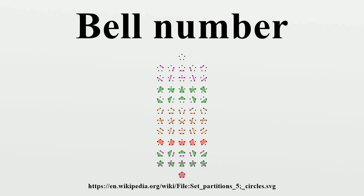BN is the number of partitions of a set of size N. A partition of a set S is defined as a set of non-empty, pairwise disjoint subsets of S whose union is S. For example, B3 equals 5 because the three-element set {A, B, C} can be partitioned in five distinct ways.